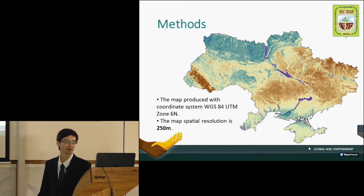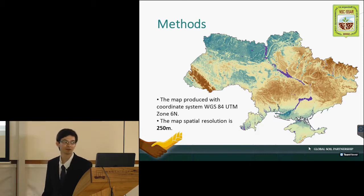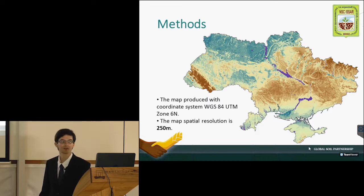Here is the resulting map of predictions for mineral soils. It is done in the coordinate system of WGS84 UTM Zone 36N and the map's spatial resolution is 250 meters.